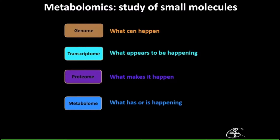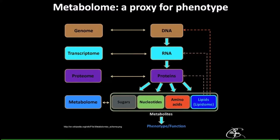So what is metabolomics? It has many definitions, but here's mine: it's the study of small molecules. Where does it fit in the hierarchy of the biochemical signaling cascade? If our genome is what can happen, and our transcriptome is what appears to be happening, then the proteome or the enzymes are what make it happen — but the metabolites, they are what is or has happened. This is very interesting because if we're interested in the phenotype, the closest we can get to it is really measuring the metabolome.